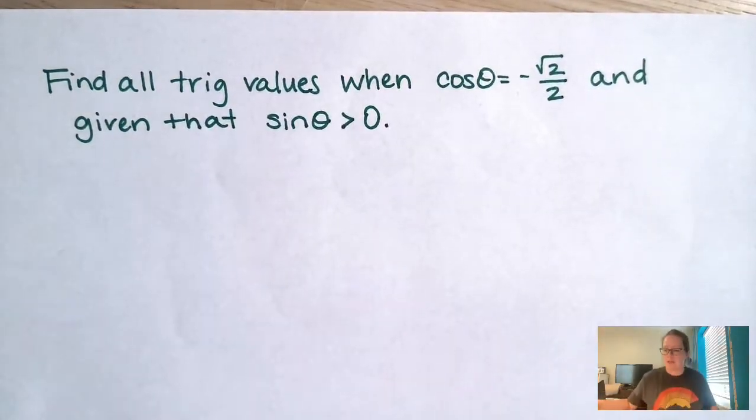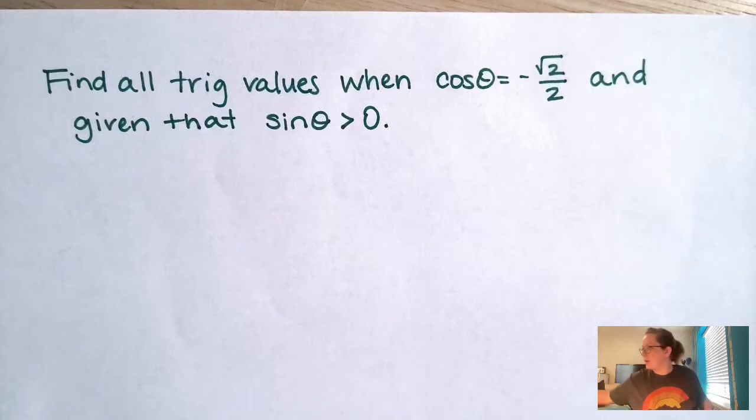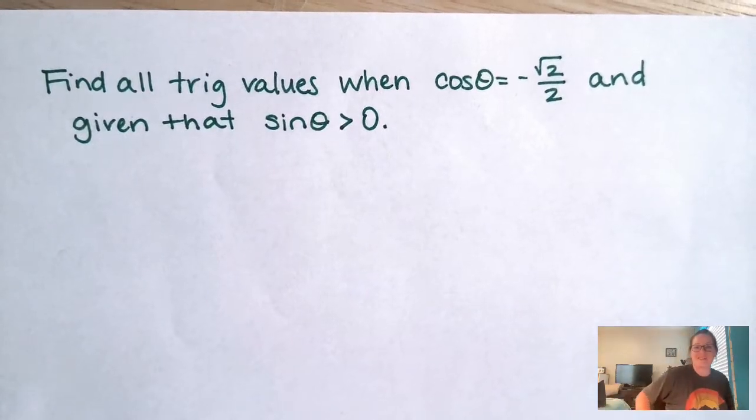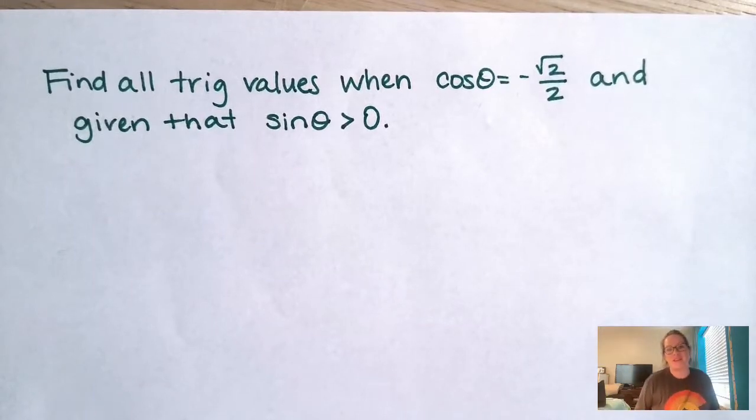Hello. I always want to say good morning, but it's not necessarily morning for you, is it? So hello, good day. All right, so we want to find all trig values when cosine theta is negative root 2 over 2, and given that sine theta is greater than 0.